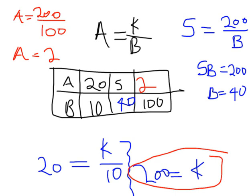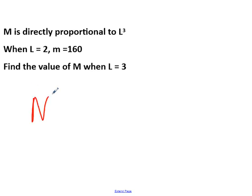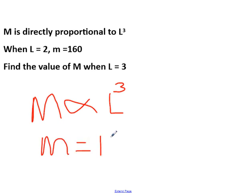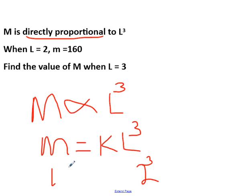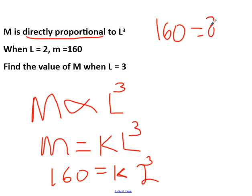The next bit is an exam question. It says m is directly proportional to the cube of l. If we write this as an equation, m equals k times l cubed. It says when l is 2, m is 160. Replacing l with 2 and cubing it: 160 equals 8k, because 2 cubed is 8. Dividing both sides by 8, k equals 20.